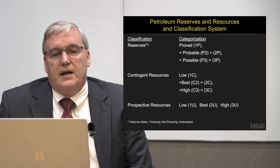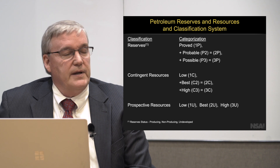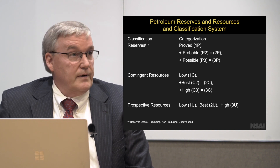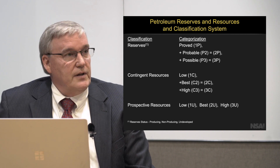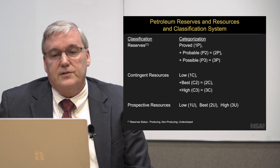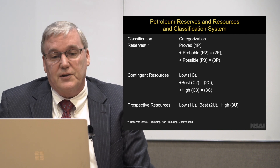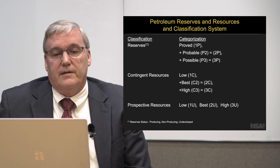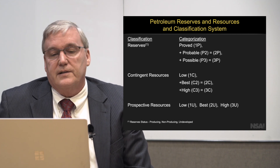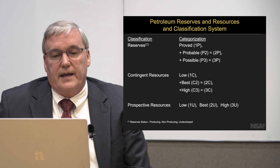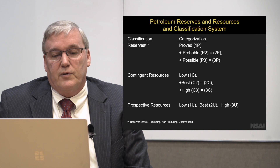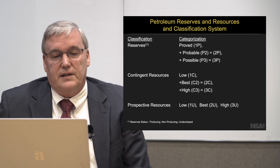To summarize on the reserve scale: proved, or the 1P number, is the base. Add the probable — called the 2P piece — and those together give you 2P. Add the possible piece, P3, and you get to 3P cumulatively. On the contingent side, you have the low estimate which is 1C; add the best estimate, C2, and you get 2C; add the high side, C3, and you get the 3C cumulative number. On the prospective side, we just have the low, best, and high, or 1U, 2U, and 3U.